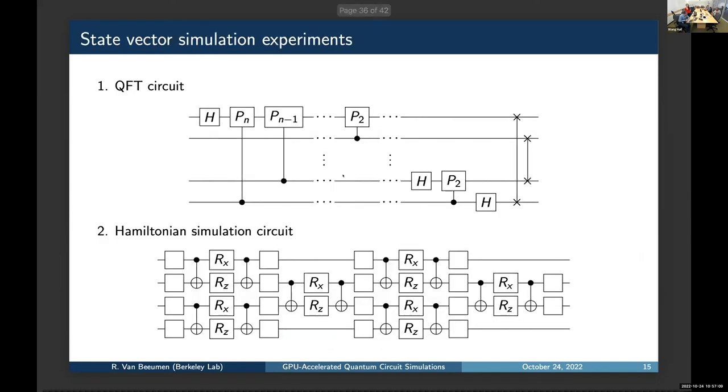So, for the experiments, we will consider two different types of circuits. The first circuit is the QFT circuit, where we have a lot of controlled operations, but sometimes nearest neighbor qubits, but sometimes also the qubits are located far away from each other. And then, as a second example circuit, we use a constant depth circuit for Hamiltonian simulation, where we have the following only nearest neighbor connection.